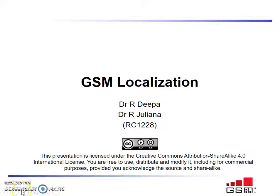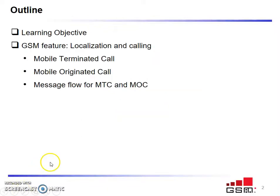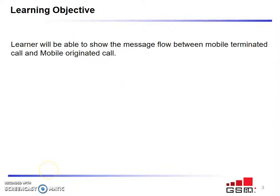Now we discuss GSM localization. The learning objective covers the GSM features of localization and calling. We'll be discussing mobile terminated call, mobile originated call, and the message flow for MTC and MOC. Once we finish this, the learner will be able to show the message flow between the MTC and the MOC.